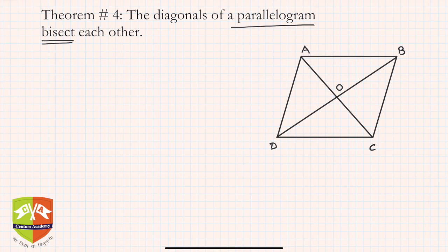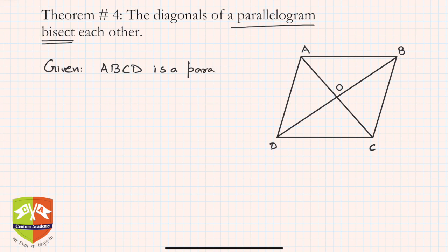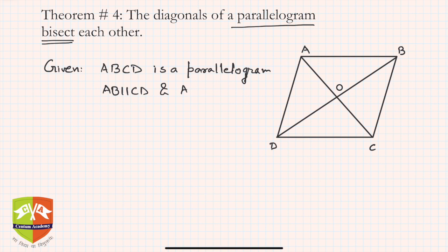Now we have to prove that AO is equal to OC and DO is equal to OB. So let's do the proof. Given: ABCD is a parallelogram. From that, we automatically have AB parallel to CD and AD parallel to BC. To prove: AO is equal to OC and BO is equal to OD.